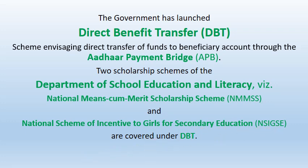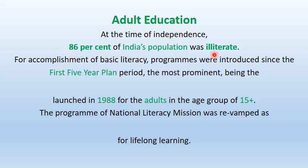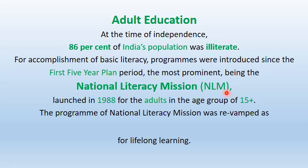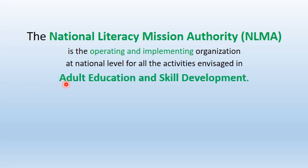Adult Education: At the time of independence, 86% of India's population was illiterate. For accomplishment of basic literacy, programs were introduced since the first five-year plan period, the most prominent being the National Literacy Mission (NLM), launched in 1988 for adults in the age group of 15 years and above. The NLM was revamped as Sakshar Bharat for lifelong learning. The National Literacy Mission Authority is the operating and implementing organization at the national level for all activities in adult education and skill development.